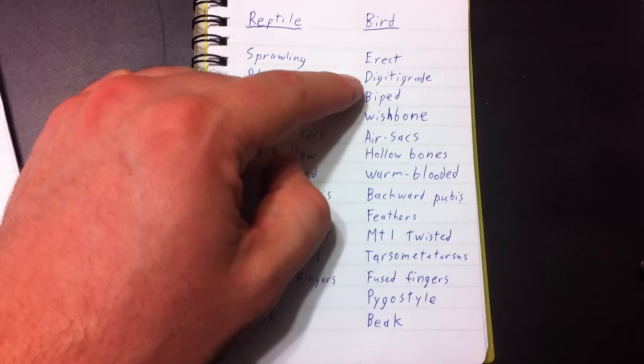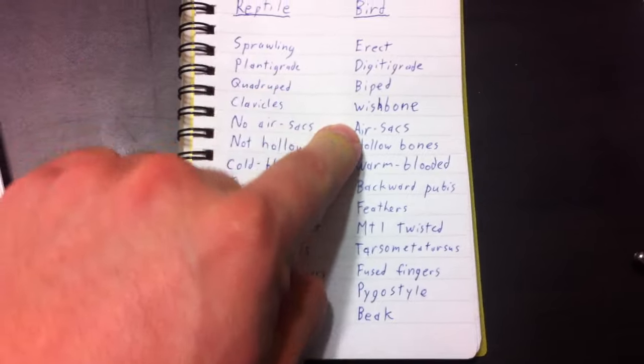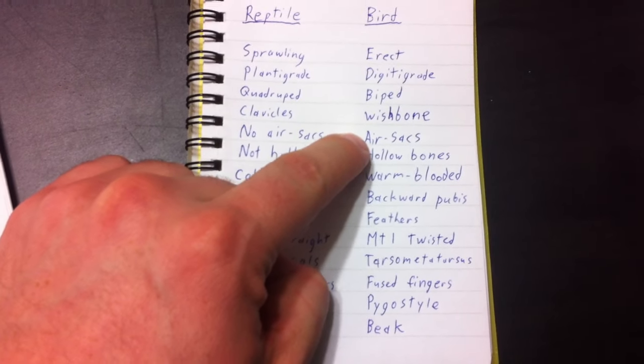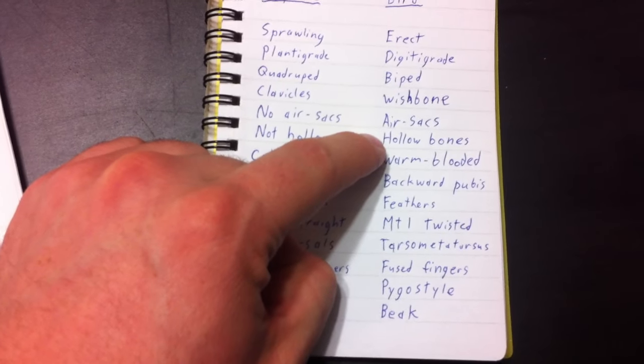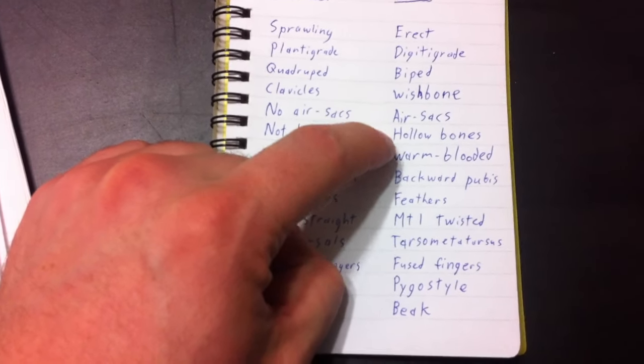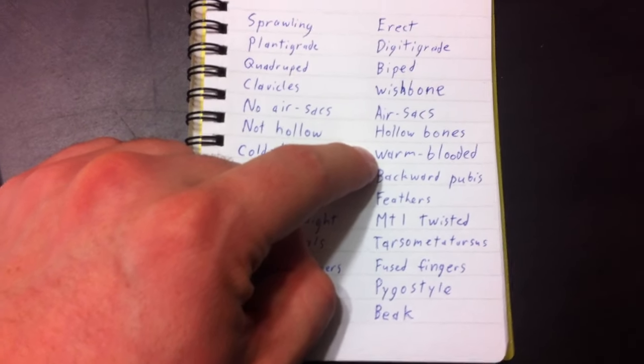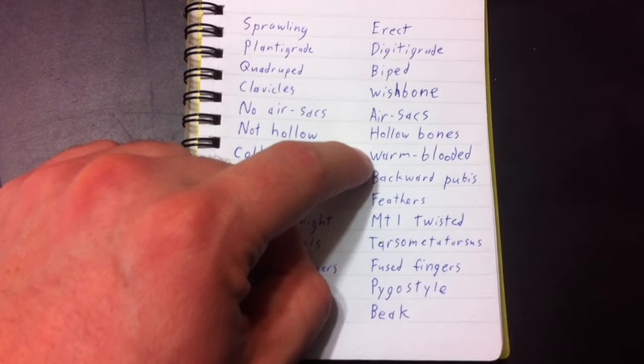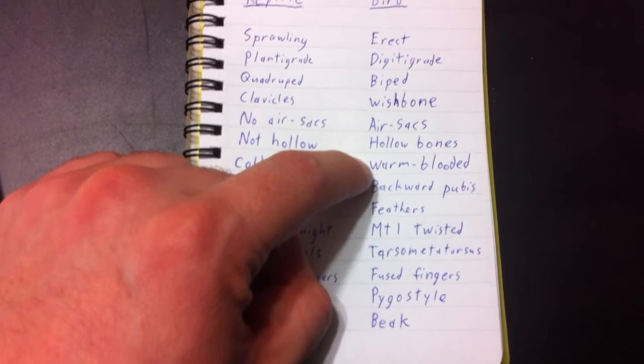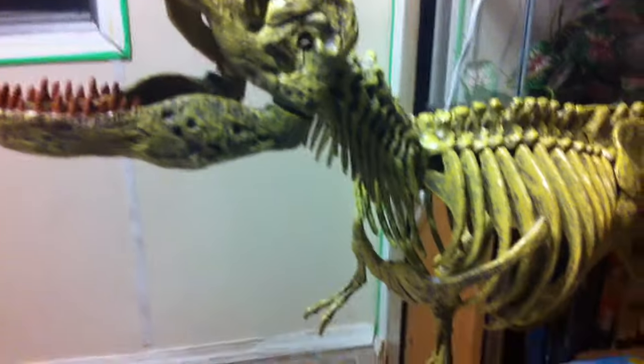Okay, do we find a subset of dinosaurs that are bipedal, have wishbones, have indents in their vertebrae that are similar to those in birds that accommodate air sacs, have hollow bones, and also have a body form that are indicative of a warm-blooded animal, something that would maintain a high metabolism. And perhaps we'd even find isotope ratios that indicate warm-bloodedness. Well, yes, we do. They're called theropods. So here's an example of a theropod. This one's called Tyrannosaurus rex.